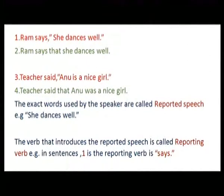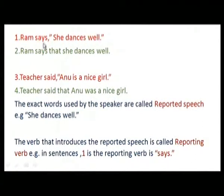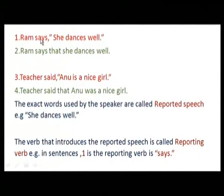The verb that comes before the inverted commas — that is the reporting verb. So in a direct sentence, two things are present: first, what is inside the inverted commas (the direct speech), and second, the verb before the inverted commas (the reporting verb). Now, narration moves further and we will see how many tenses it extends into.